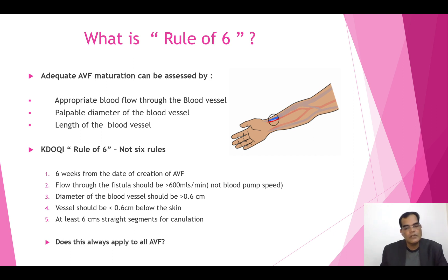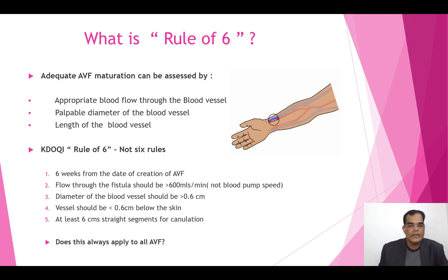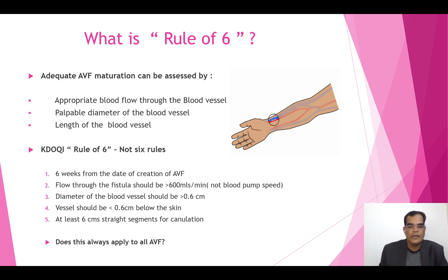Primarily, we need to wait six weeks from the date of creation of an AV fistula. Normally it takes about four to six weeks to develop a vessel, but it depends on various patient parameters. Another rule is that this assessment can be done by Doppler, or approximately by an experienced person, to confirm that flow through the AV fistula is more than 600 mls per minute before cannulating.